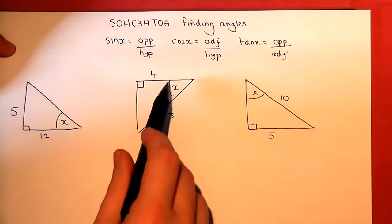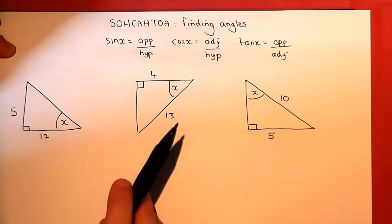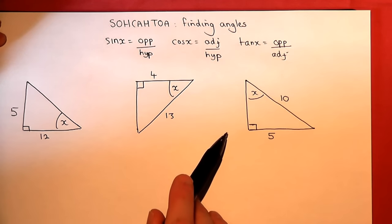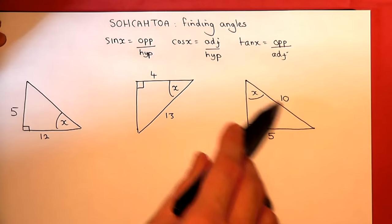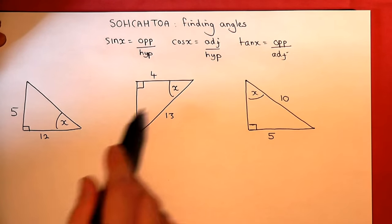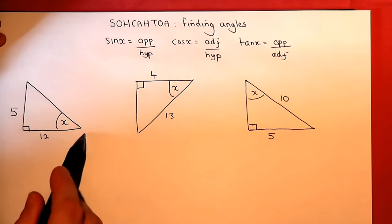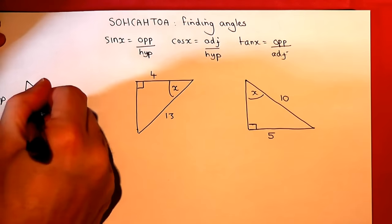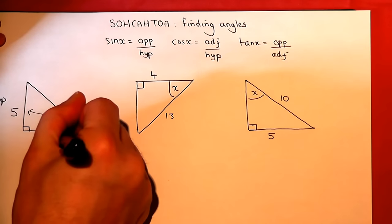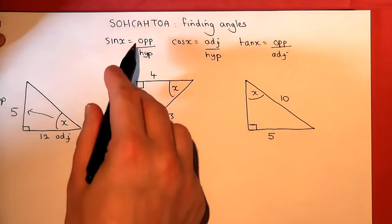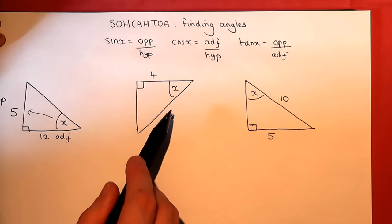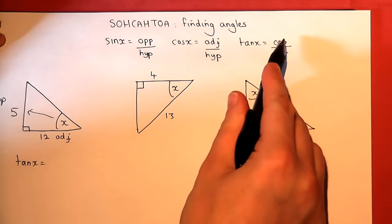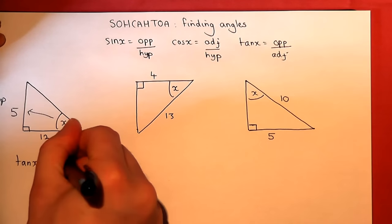This video talks through how to find missing angles when you know two sides. One side is adjacent or the hypotenuse — the hypotenuse is always the longest side, opposite the right angle. In the first triangle, the hypotenuse is not given. We're given the side opposite the angle, which is the opposite, and the other side next to the angle, which is the adjacent. Since we know opposite and adjacent, we use the tan equation: tan of x equals opposite over adjacent, which is 5 twelfths.